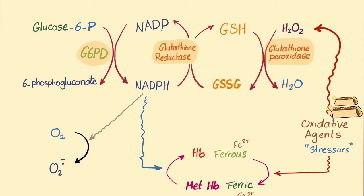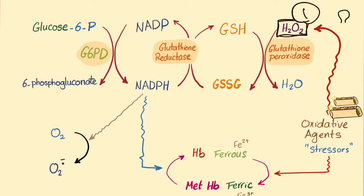As explained in the last video, G6PD is a hero because it produces a very important molecule called NADPH. NADPH has three purposes in your life. Number one: to protect you against free radical damage, so that red blood cells can be spared. Number two: to protect you against methemoglobinemia by converting methemoglobin back to hemoglobin, protecting you from oxidative stressors.